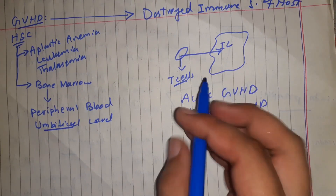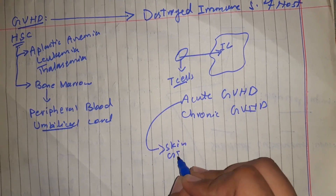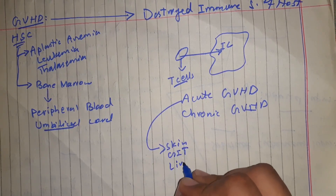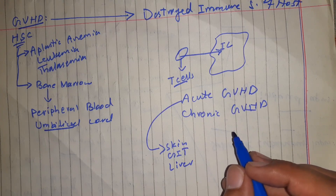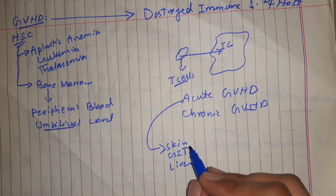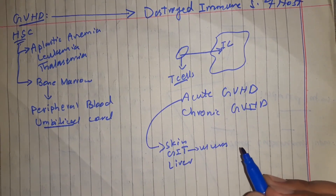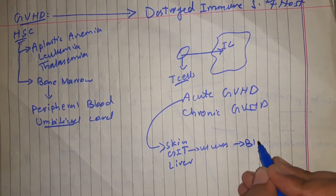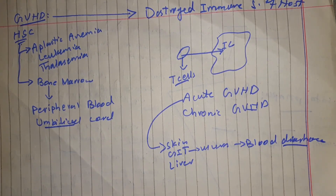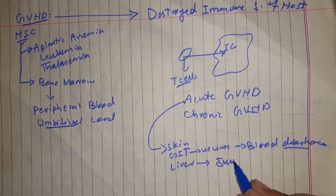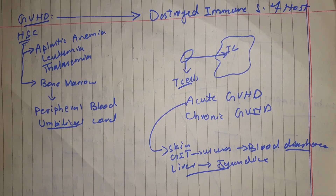Acute graft versus host disease affects three principal sites: skin, GI tract, and liver. When the skin is affected, a rash appears on the palms, soles, neck, and ears, which later becomes generalized. In the GI tract, it leads to ulcer formation and bloody diarrhea. In the liver, it destroys the hepatic ducts, causing jaundice and abnormal liver function.